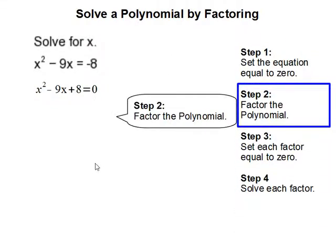Step 2: factor the polynomial. To factor the polynomial, we find two numbers that will multiply to get the third term and that will add up to get the coefficient of the center term.